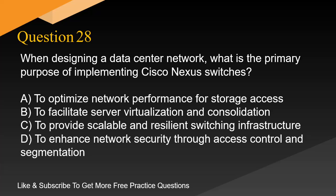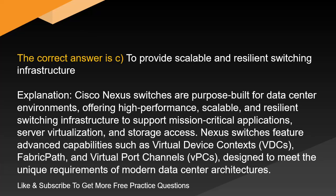Question 28. When designing a data center network, what is the primary purpose of implementing Cisco Nexus switches? A. To optimize network performance for storage access. B. To facilitate server virtualization and consolidation. C. To provide scalable and resilient switching infrastructure. D. To enhance network security through access control and segmentation. The correct answer is C: to provide scalable and resilient switching infrastructure. Cisco Nexus switches are purpose-built for data center environments, offering high-performance, scalable, and resilient switching infrastructure to support mission-critical applications, server virtualization, and storage access. Nexus switches feature advanced capabilities such as virtual device contexts, VDCs, fabric path, and virtual port channels, VPCs, designed to meet the unique requirements of modern data center architectures.